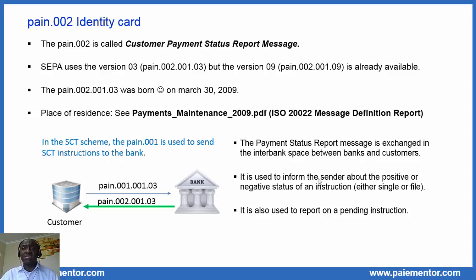You may wonder why SEPA has not adopted the next versions — the reason is simple: version 3 is totally fine for the SEPA needs, at least right now. When a debtor sends a PAIN.001 message to its bank, the message might end up being rejected partially or totally for many reasons. When this happens, the debtor bank sends the PAIN.002 message to the debtor to inform him about the rejections. In certain cases, the bank may send many PAIN.002 messages while the PAIN.001 is going through the different processing steps. Like many messages, the PAIN.002 1.3 was born on March 30, 2009, and its place of residence is the message definition report — the file name is payment maintenance 2009.pdf.